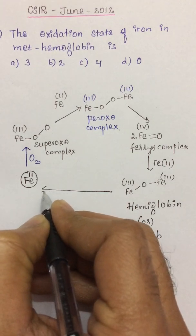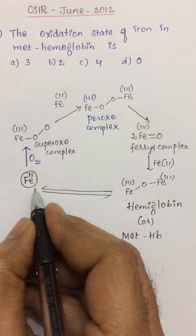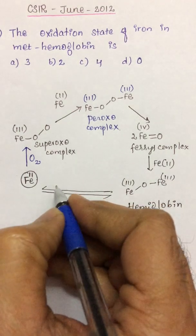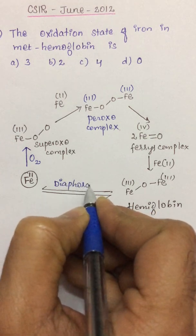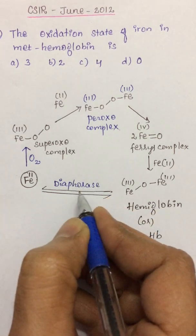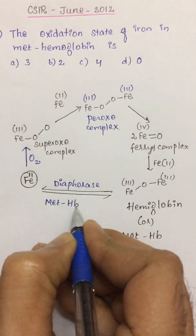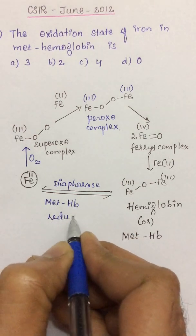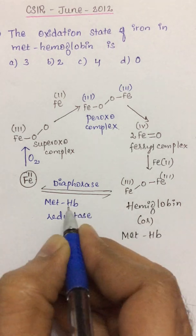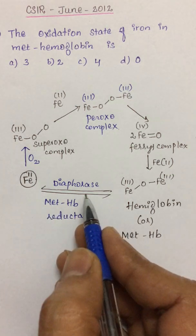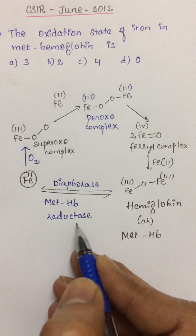But there is a mechanism where the hemiglobin is back-converted into hemoglobin by an enzyme called diaphorase. The another name for diaphorase is methemoglobin reductase. So whatever hemiglobin or methemoglobin that is formed can be back-converted into hemoglobin by the action of an enzyme called diaphorase or methemoglobin reductase.